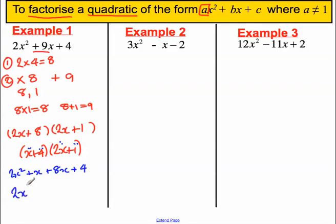Collecting like terms, 2x squared plus 9x plus 4, which is exactly like our original expression. Hence, this is the factorised version.